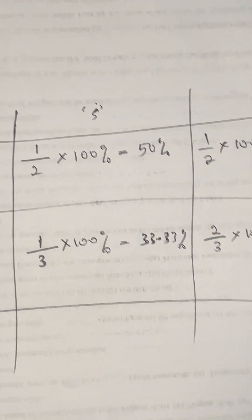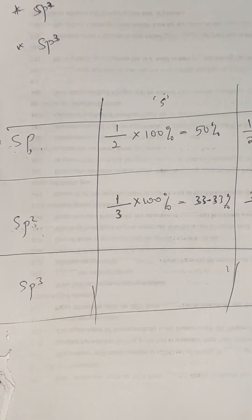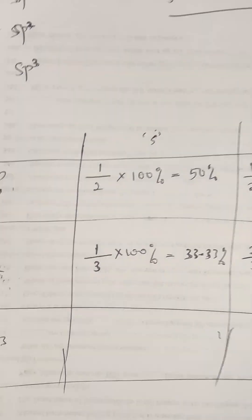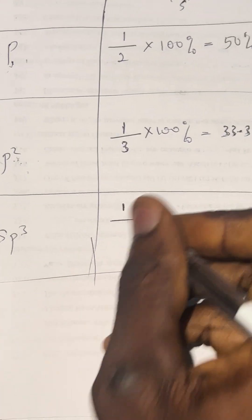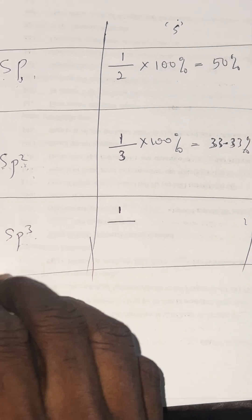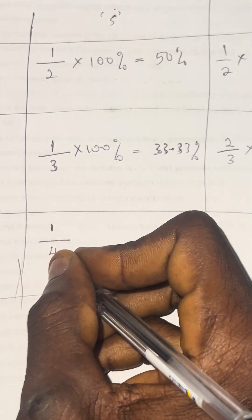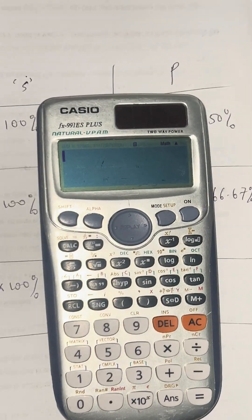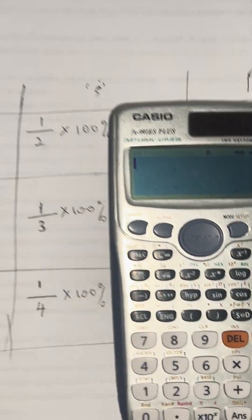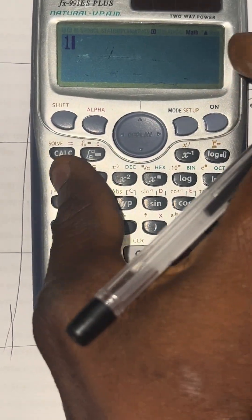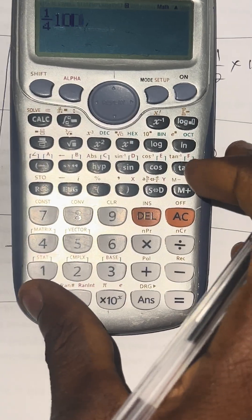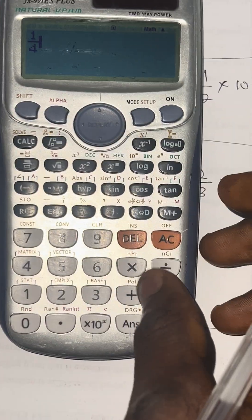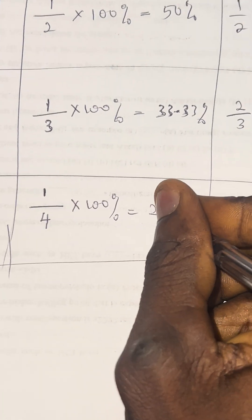Now, the S character of SP3. How many S do we have? It's 1. The P we have here is 3, so 3 plus 1 S makes it 4. That's 1 over 4, multiplied by 100%. That gives us 25%. So the S character percentage in SP3 is 25%.